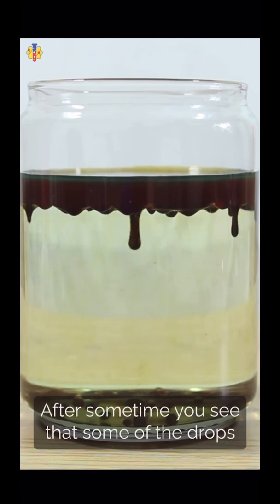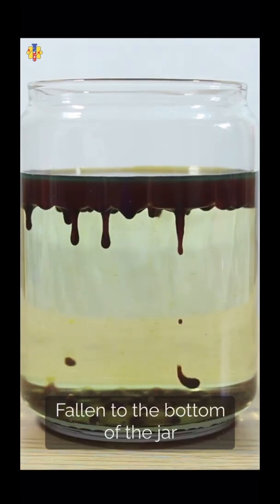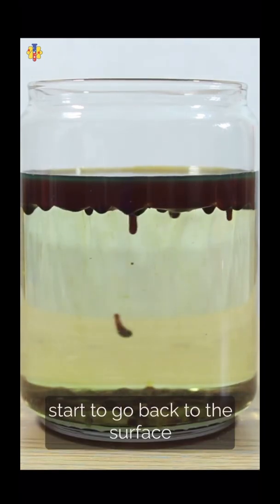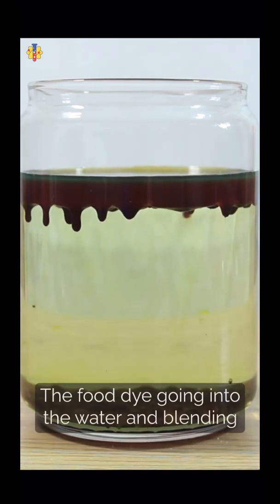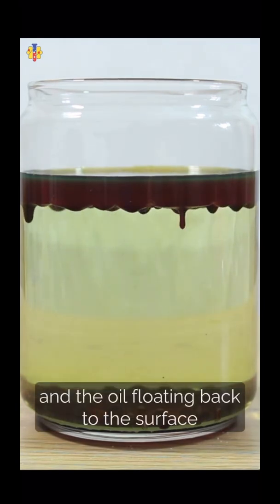After some time, you'll see that some of the drops that have fallen to the bottom of the jar start to go back to the surface. This is because the food dye and the oil start to separate, the food dye going into the water and blending, and the oil floating back to the surface.